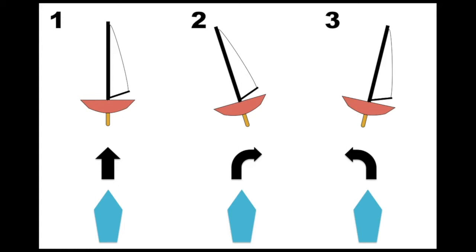But if the boat heels to windward like in the second diagram, the boat will want to steer away from the wind. It will want to bear away. And conversely if the boat is heeled to leeward, the boat will start turning towards the wind.